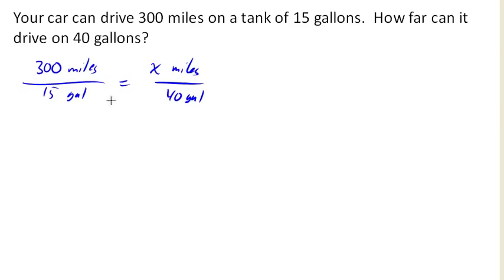we can go through and solve it. And so one way to solve it would be to multiply both sides by 40. The reason we do that is because then the 40 cancels out or reduces there. And then we end up with, let's see here, 40 times 300 is, let's see, 12,000 over 15 equals x.